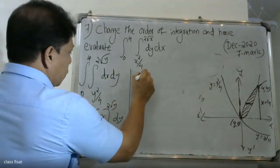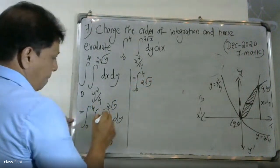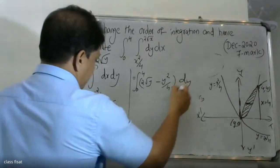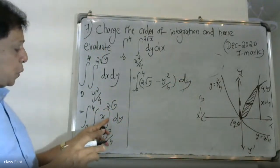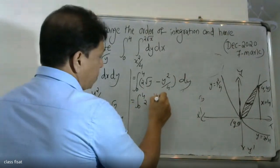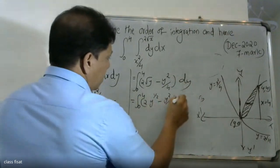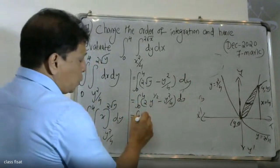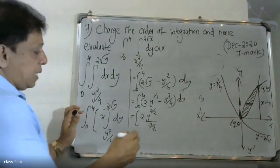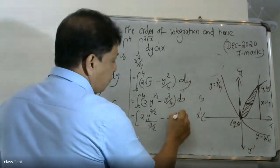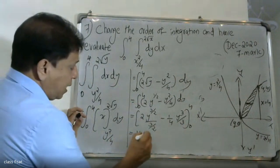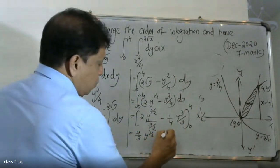That is integral from 0 to 4 of (2√y − y²/4) dy. Integrating: 2 · y^(3/2)/(3/2) − y³/12, which equals 4/3 · y^(3/2) − y³/12, evaluated from 0 to 4.